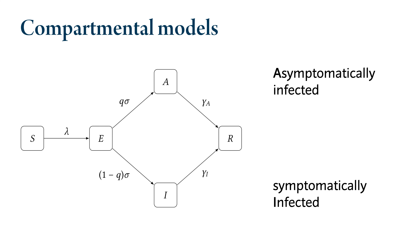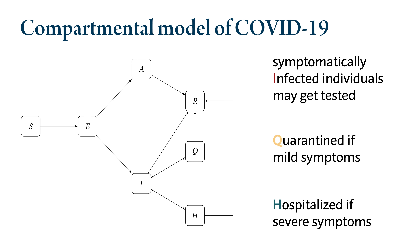The next refinement is to split all infectious individuals into two independent compartments. One consists of asymptomatically infected individuals, and the other consists of symptomatically infected individuals. This is certainly the case with COVID-19, and it is important to make this distinction for the future human behavior model, because asymptomatically infected individuals usually do not know that they are infected.